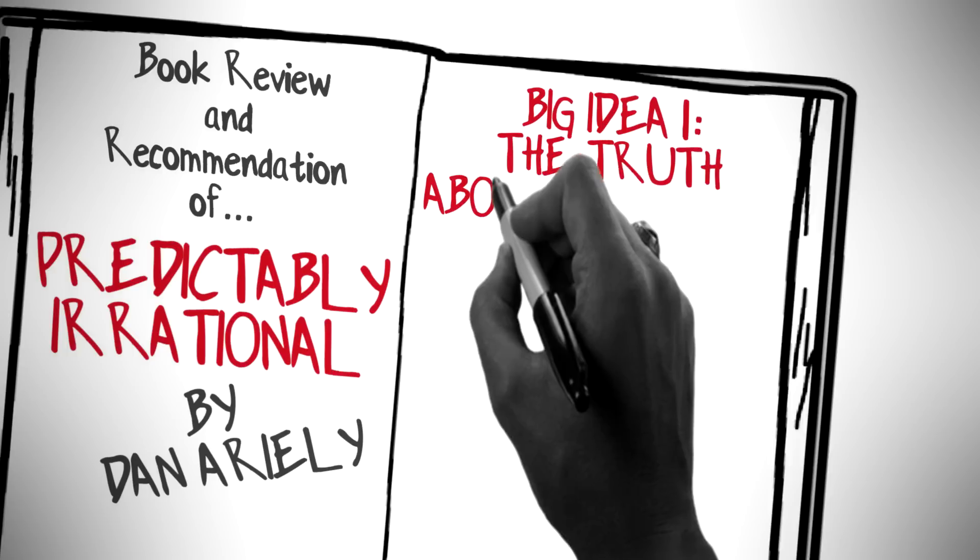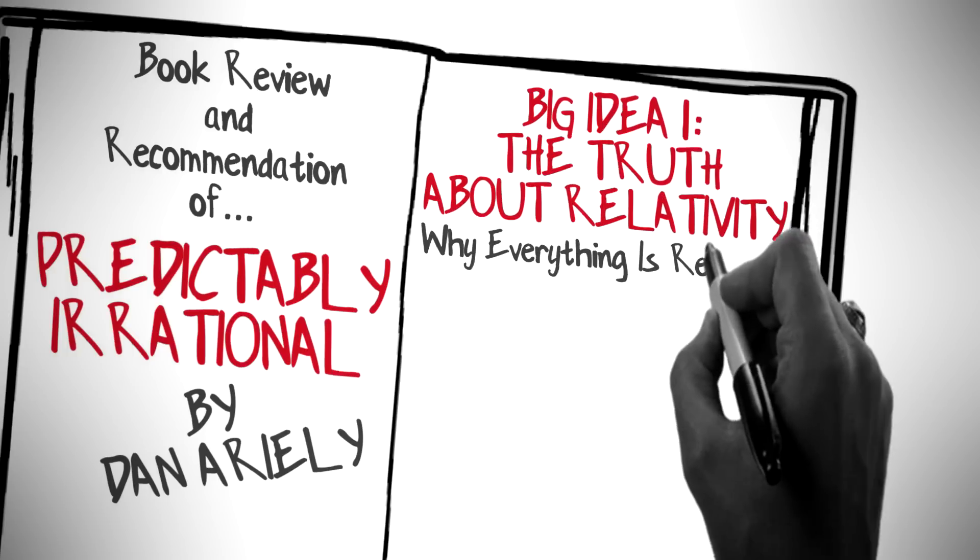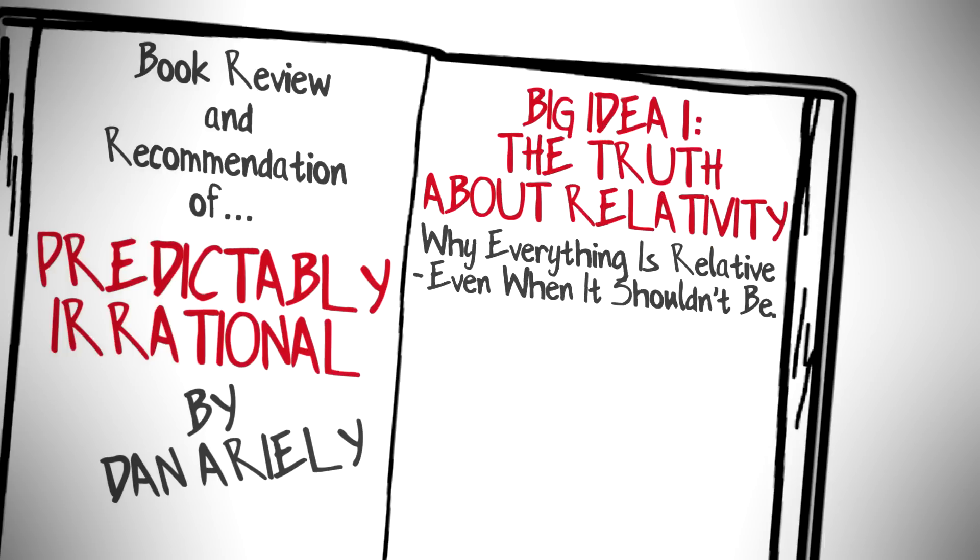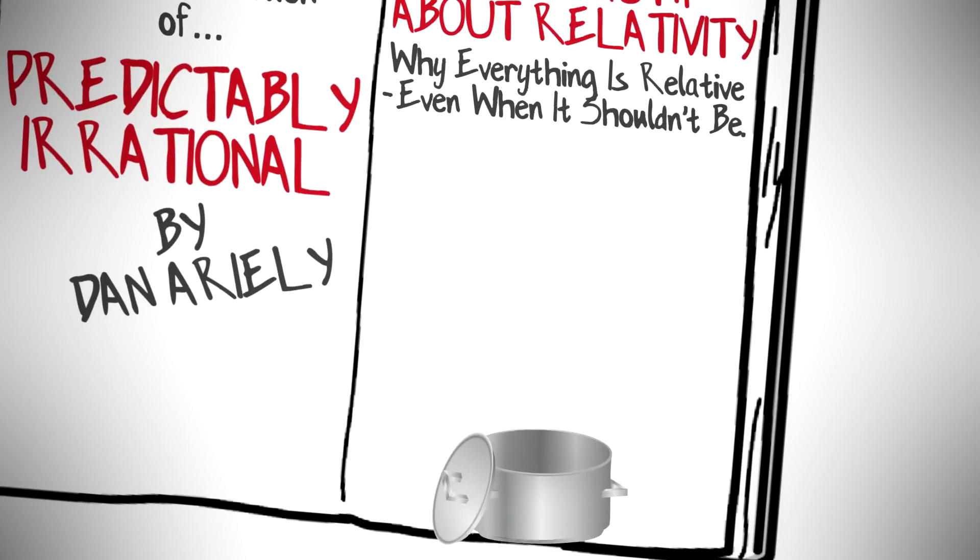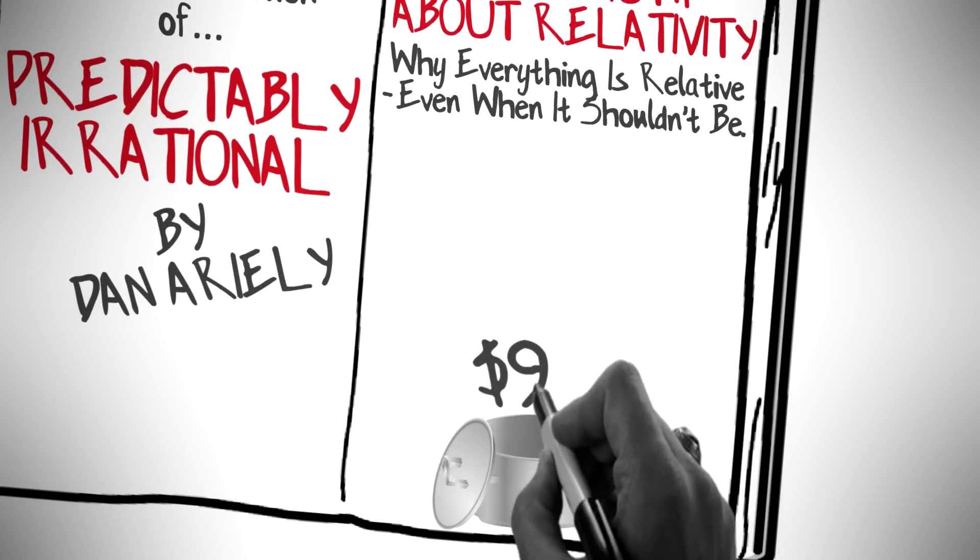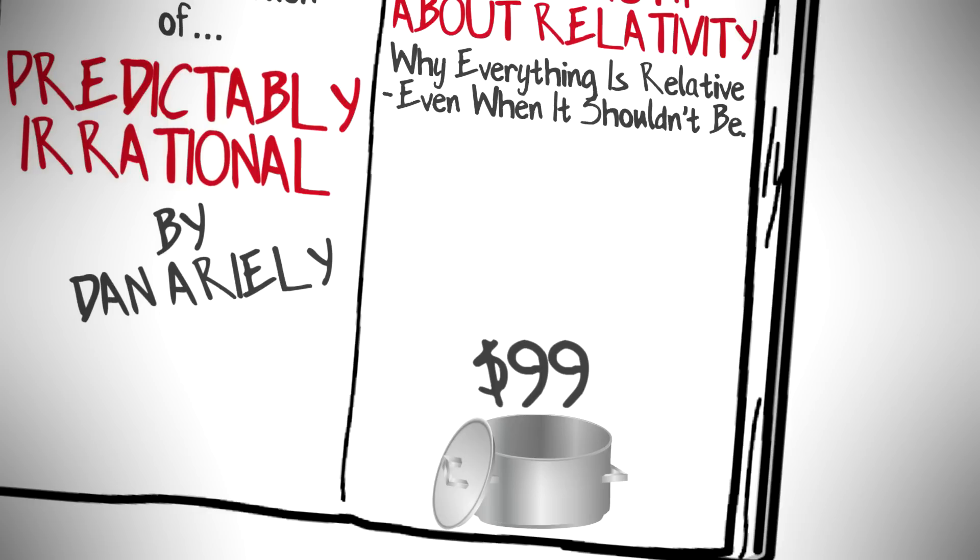The truth about relativity: why everything is relative even when it shouldn't be. Imagine you're walking around the store looking at things and you see a bread maker. There's only one bread maker and it costs $99, and you look at it and then move on to other things. This was a huge problem for a bread maker company.